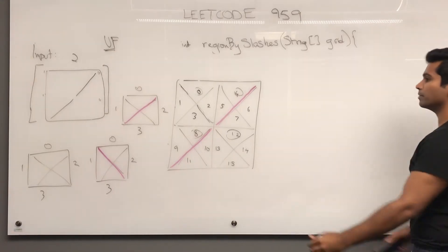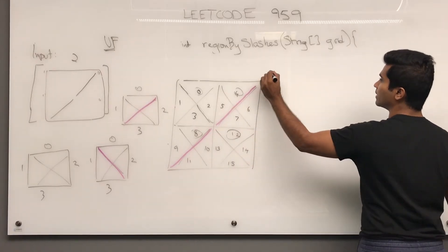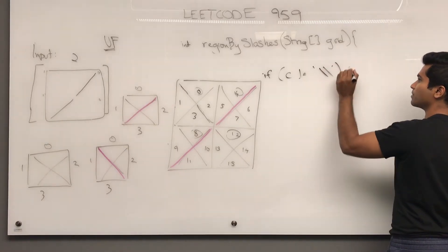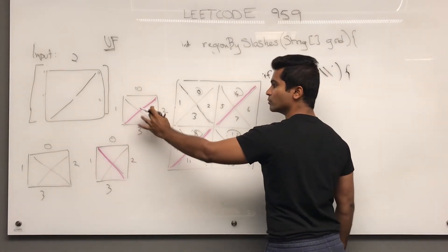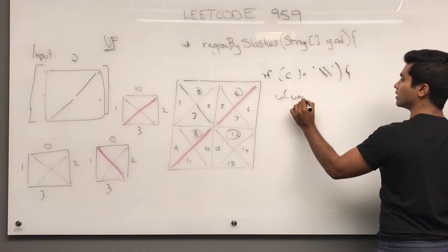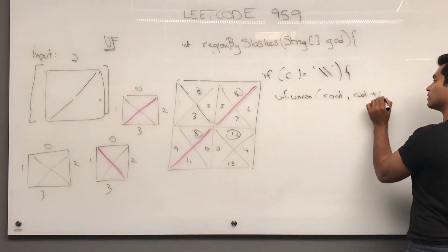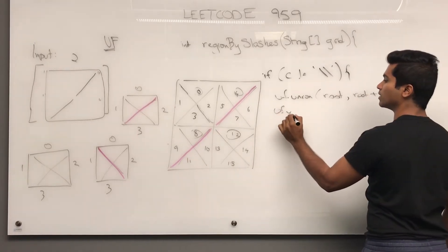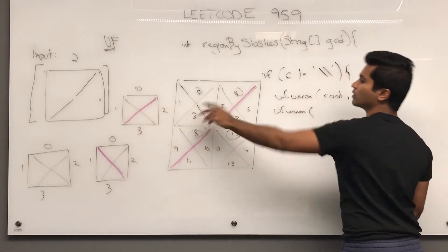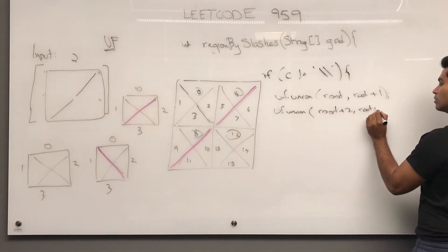Okay, so now we get into the actual checking. If the character c we found was not a backward slash, so it means it's not this. So it could be this, which means 0 and 1 get union together. uf dot union, root, and then root plus 1, and then uf dot union these two together. Because if it's not this way, it could go this way, and then 2 and 3, root plus 2, root plus 3.